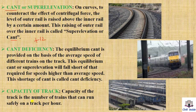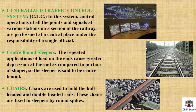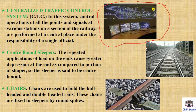Next, capacity of track. The capacity of the track is the number of trains that can run safely on the track. Next, centralized traffic control system. In this system, control operations of all the points and signals at various stations on a section of the railway are performed at a central place under the responsibility of a single officer. Like in movies, you see a whole area displayed on screens where every train's position and speed is monitored. This is our CTC.